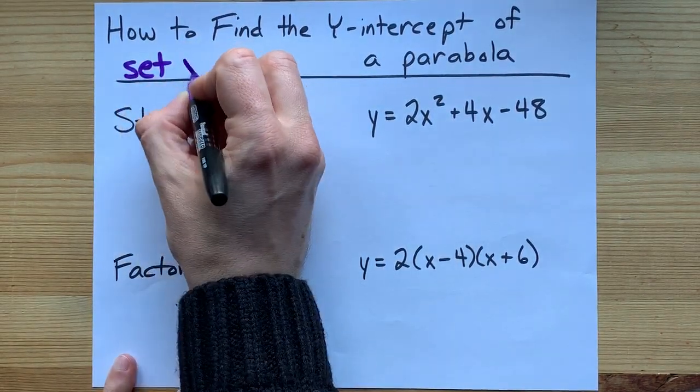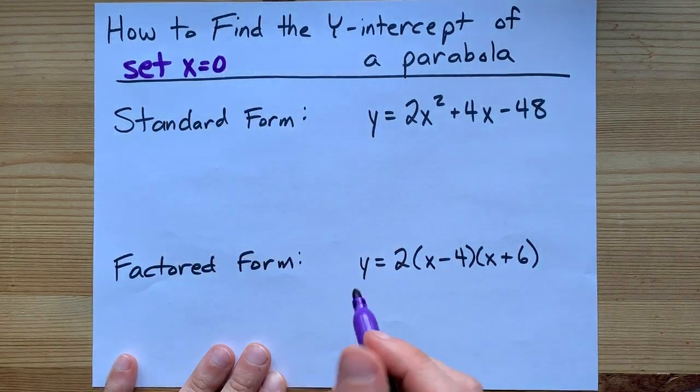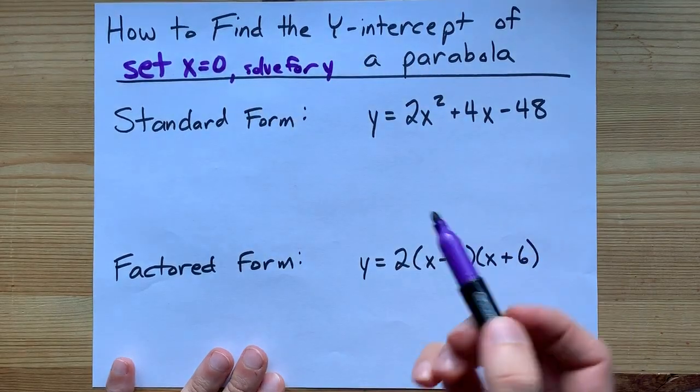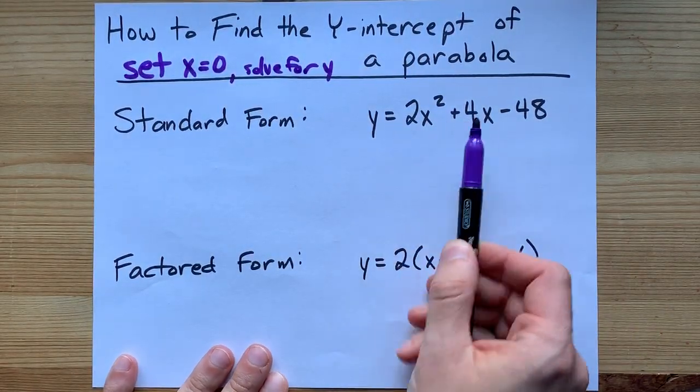The method is to set x equal to 0 and then solve for y. That's pretty easy, especially if it's written in y equals form.